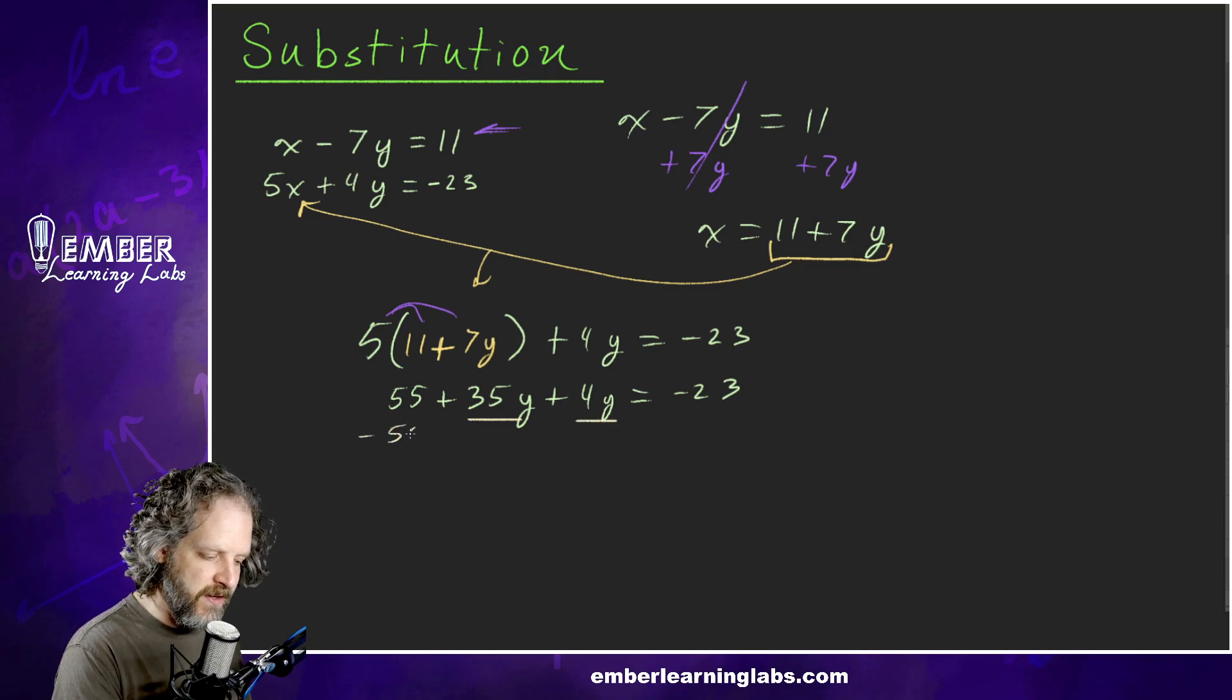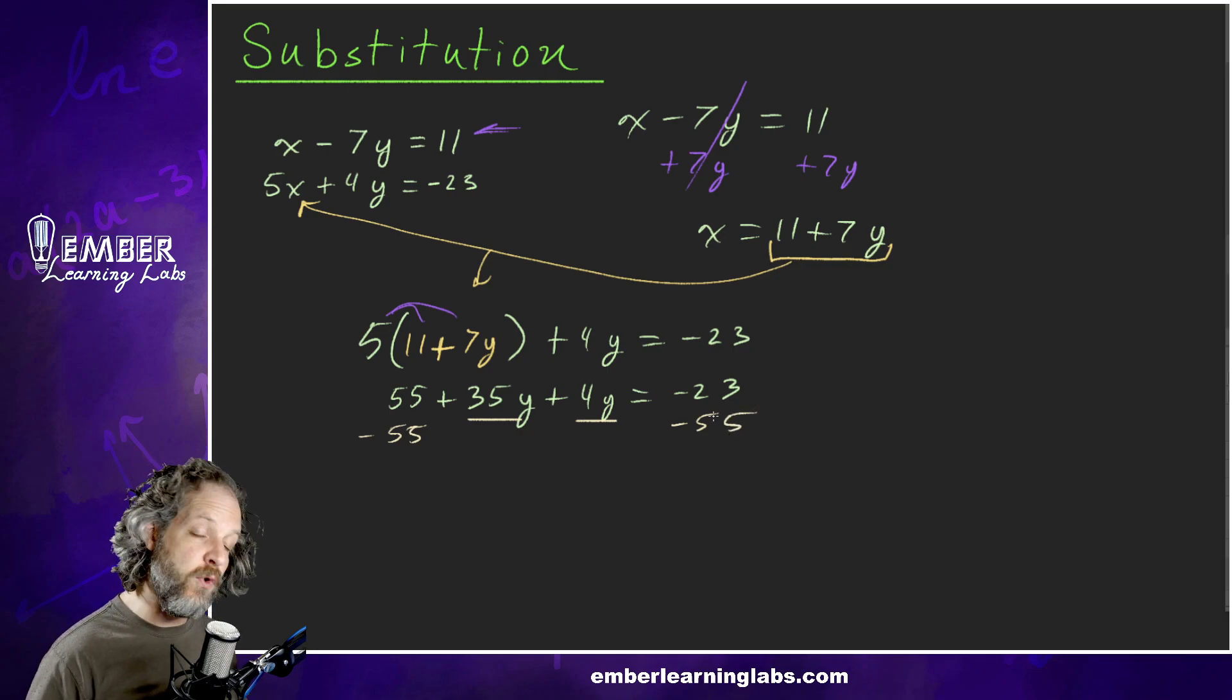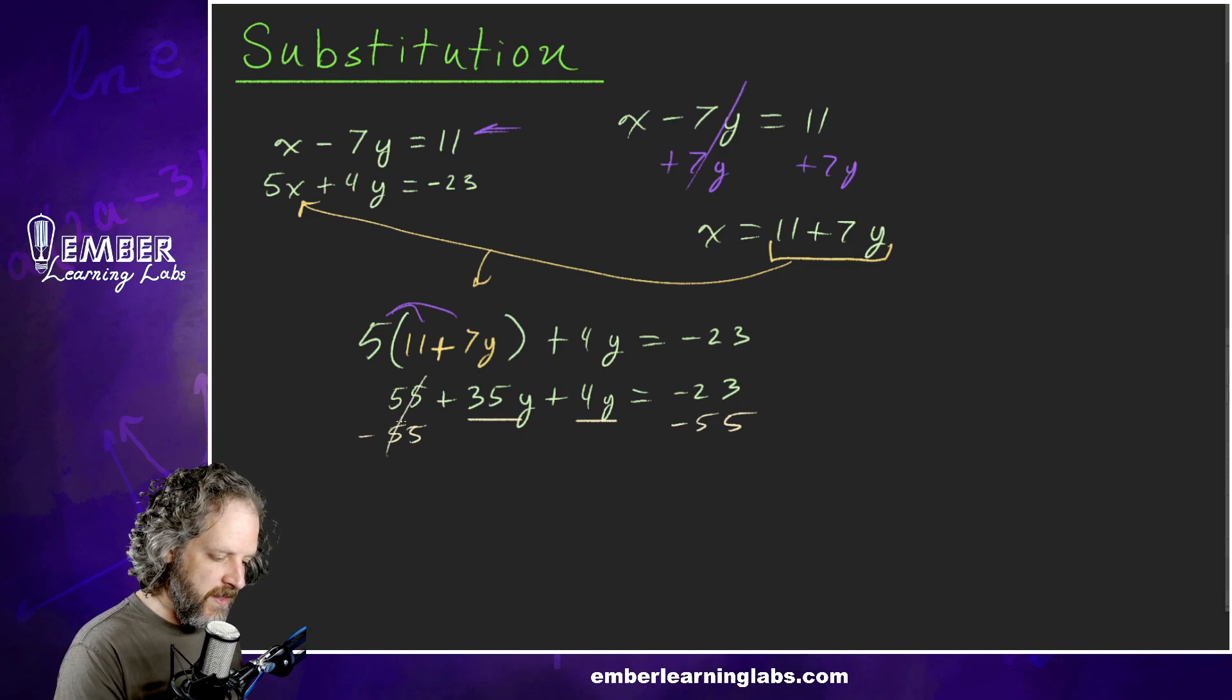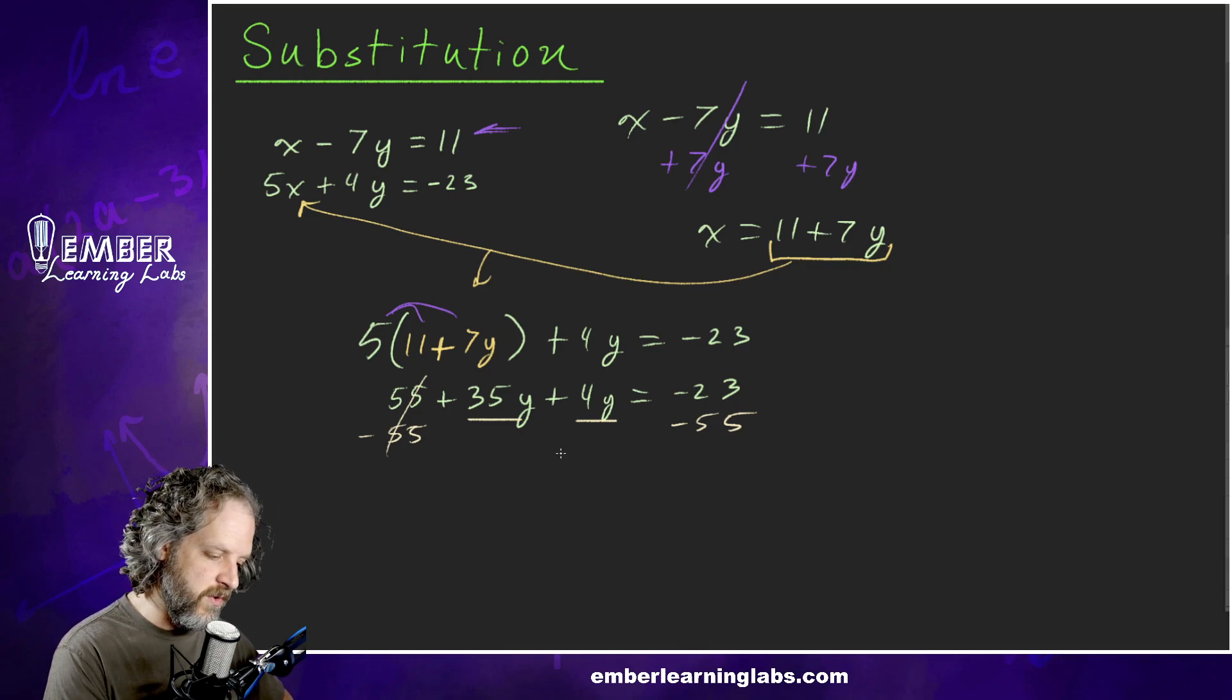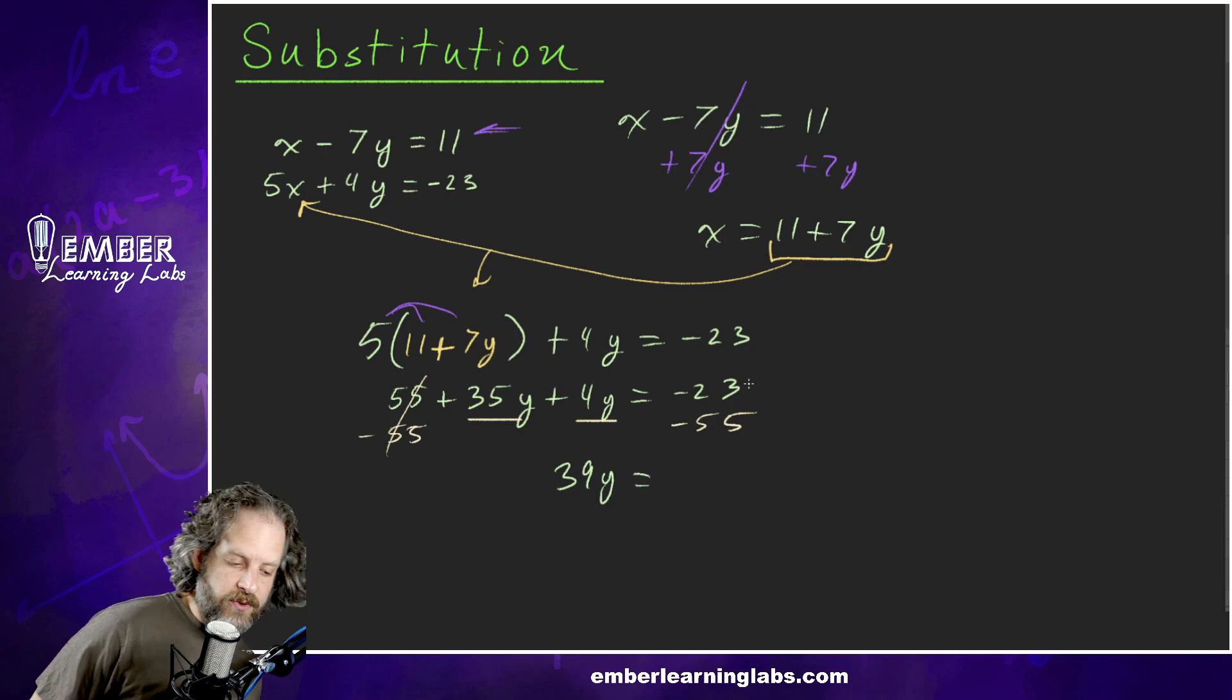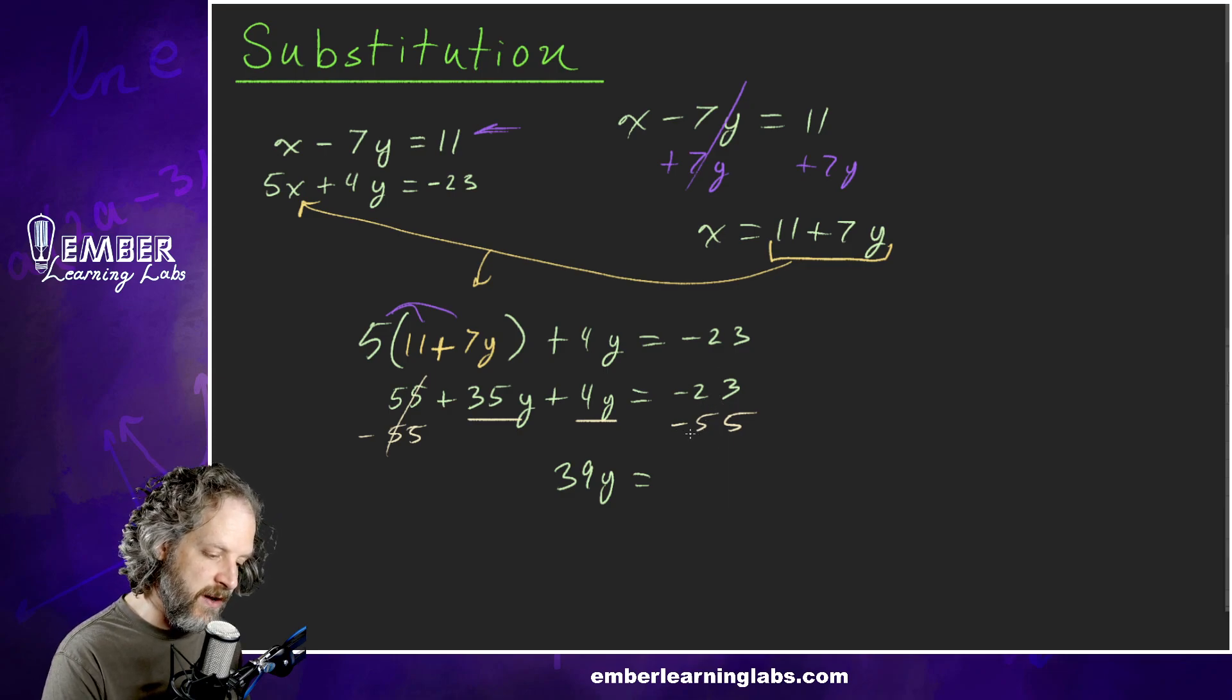We're going to distribute the 5. Five times 11 is 55. Five times 7y would be 35y plus 4y equals negative 23. Now we've got like terms. Let's combine those like terms. We're in Algebra 2, so let's go ahead and subtract off the 55 as well. Let's take care of both of those things. As long as we write it real neat like this, especially if you're changing colors for the intermediate steps, it's real easy. We can sometimes combine those steps when we're doing those things.